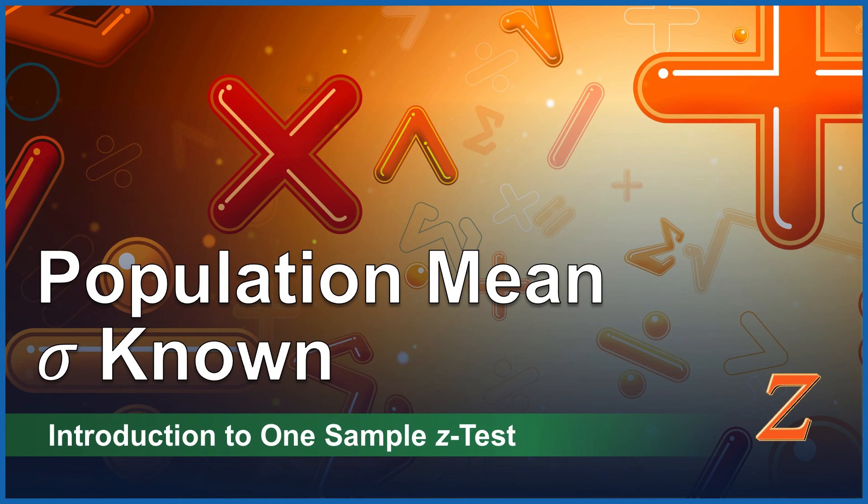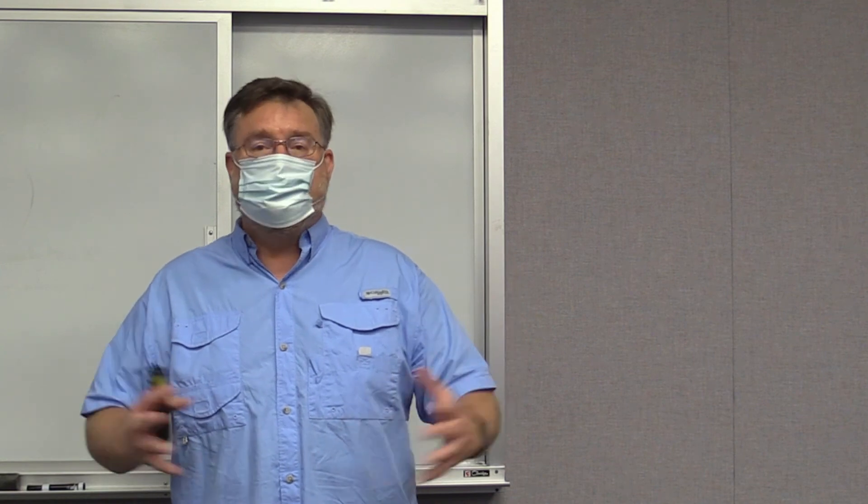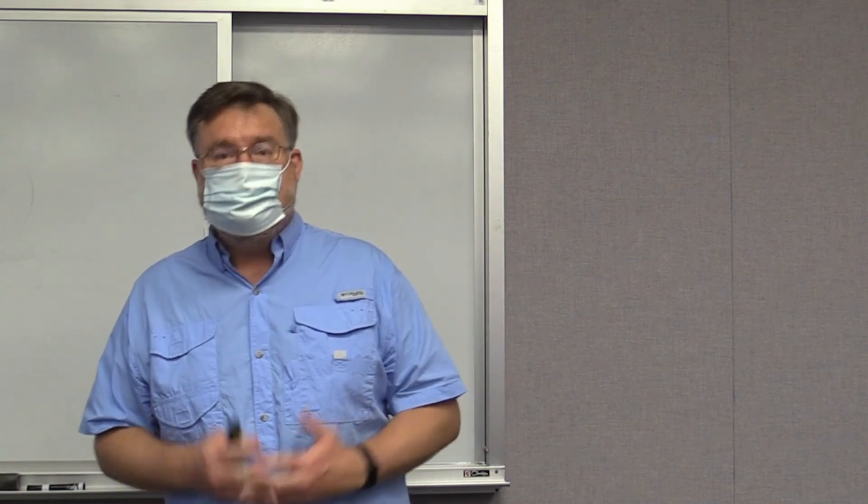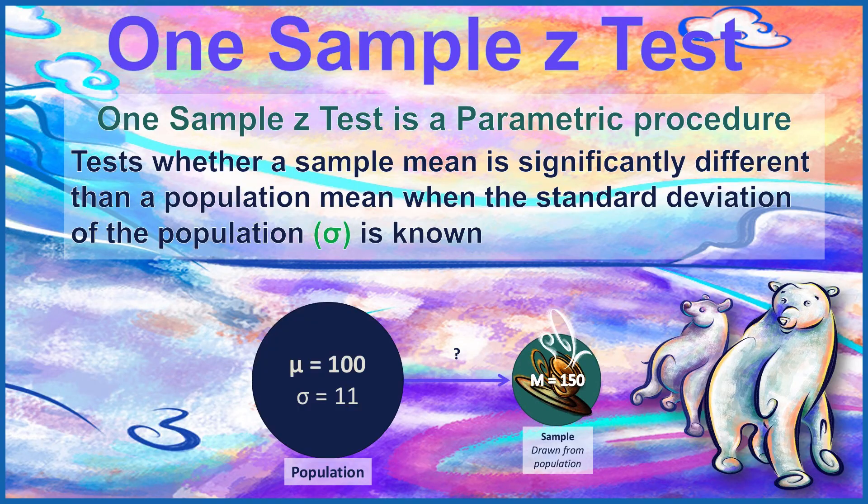We're going to begin when we know the mean of the population and also know the standard deviation of the population using a one-sample z-test. So we might ask, what is a one-sample z-test? It is a parametric procedure that we use to test whether a sample mean is statistically significantly different than a population mean when we know the standard deviation of the population, or sigma.